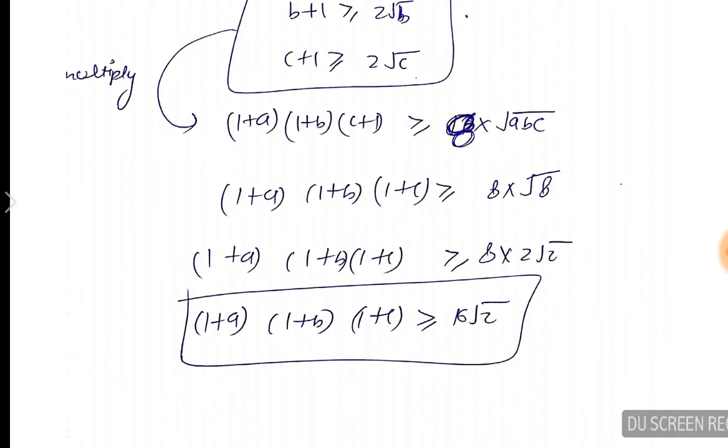So 2×8 becomes 16. Therefore (1+A)(1+B)(1+C) is greater than equal to 16√2. Any doubt?